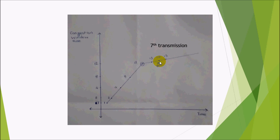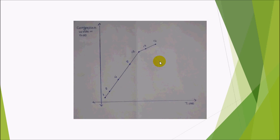So we have solved this example. But in this example there is no congestion. What will TCP congestion control do if the congestion occurs? We will take the same example with the same graph drawn up to the 7th transmission, and now consider that at the 7th transmission, congestion occurs.